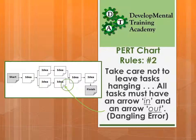The second rule is to take care not to leave tasks hanging. All tasks must have an arrow in or an arrow out. As indicated here, this task in the middle has no arrow leading on, so effectively you get to this point and have to stop — there's nothing further you can do because it leads to nothing. Ideally you'd have an arrow leading on to the next idea. The only tasks that don't have an arrow in or out are the start and finish tasks. The start will have an arrow out but not in; the finish will have an arrow in but not out.